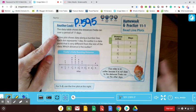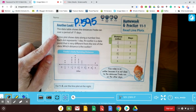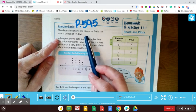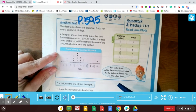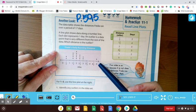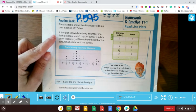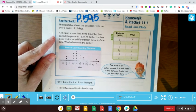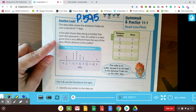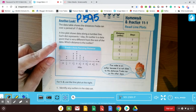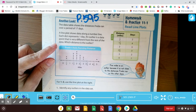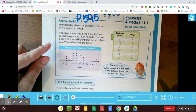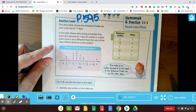So let's take another look. The data table shows the distances that Frida ran over a period of 17 days. Good for her. I haven't been out running yet. I have been walking now. A line plot shows data along a number line. Each dot represents one day. An outlier is a data point that is very different from the rest of the data, and so we've talked a lot about that outlier, and so let's do that first.